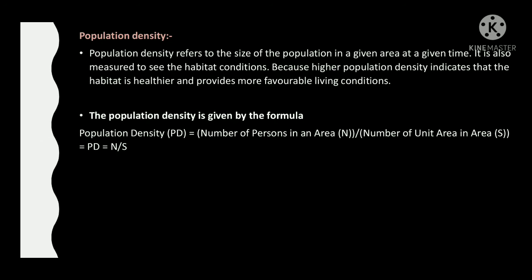Population density refers to the size of the population in a given area at a given time. It is also measured to assess habitat conditions, because higher population density indicates that the habitat is healthier and provides more favorable living conditions. The population density formula is: population density (D) equals number of individuals (N) divided by unit area (S), i.e., D = N/S.